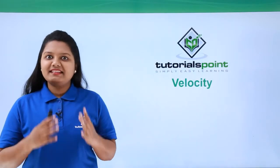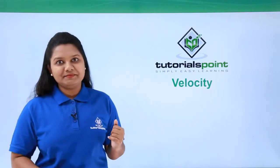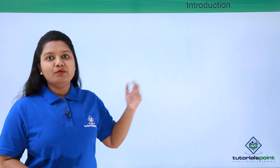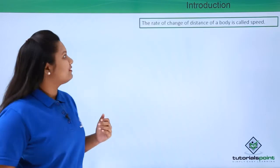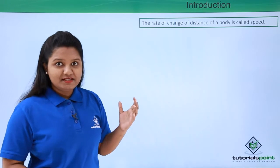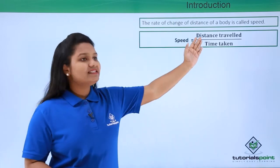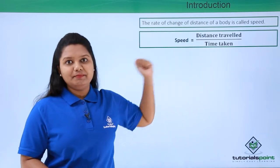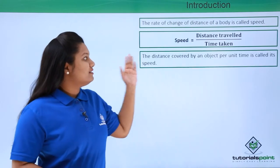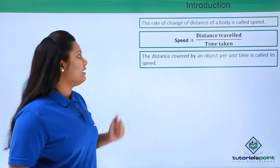Hello everyone. In this video we'll be talking about velocity. So let's brush up what we know already. We know that the rate of change of distance of a body is called speed, which we define mathematically as distance traveled divided by time taken. In other words, we can define speed as the distance covered by the object per unit time.